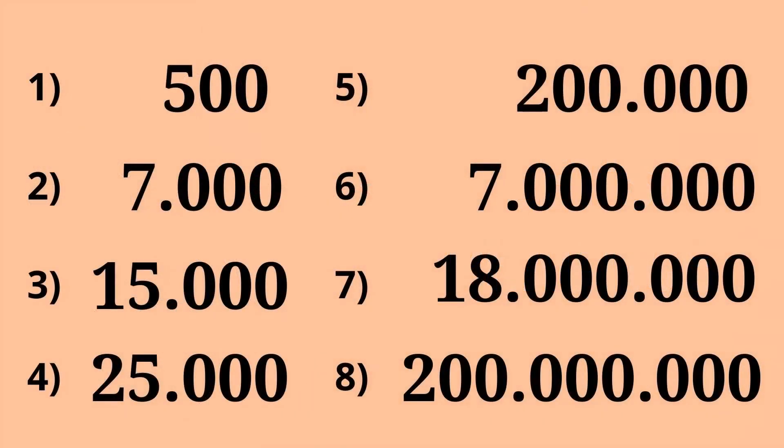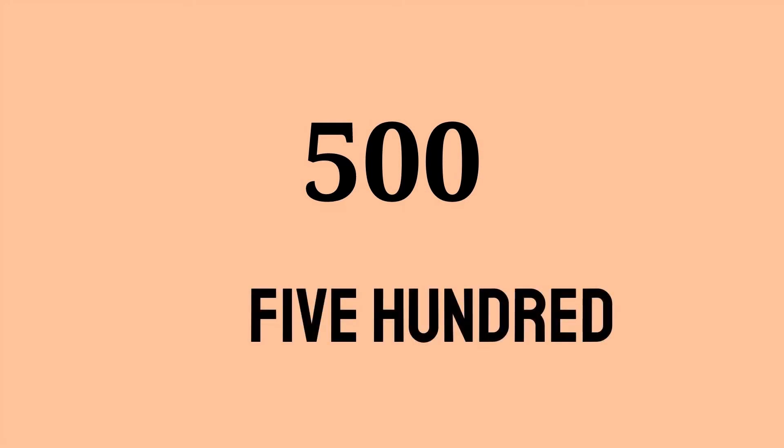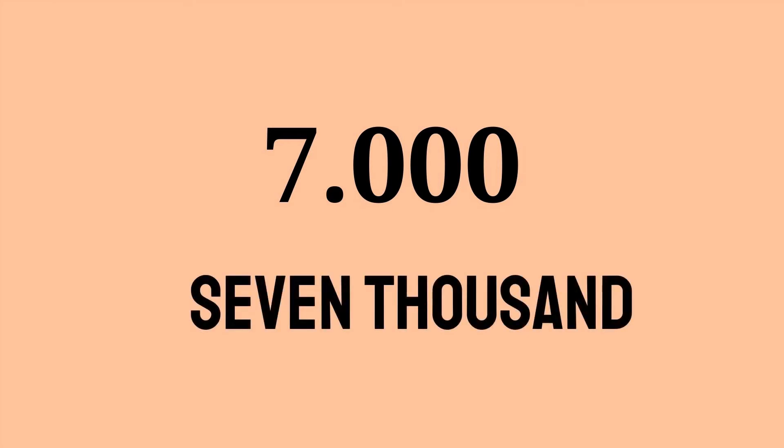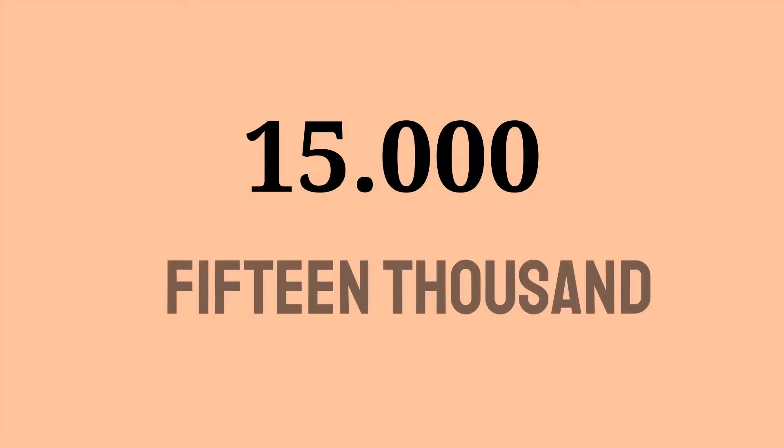I have seven numbers here for us to practice. The first one is very easy — we have two zeros here, this is simply five hundred. Let's move to number two: we have three zeros and I told you that means a thousand, so seven thousand. Number three, again we have three zeros: fifteen thousand.